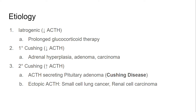Primary Cushing syndrome is defined as the overproduction of cortisol by the adrenal gland, irrespective of ACTH stimulation. As a result of this overproduction, there is negative feedback on ACTH secretion, which is why we see a decreased ACTH level. The possible causes are adrenal hyperplasia, adenoma, and carcinoma, although all three are relatively rare compared to iatrogenic causes.